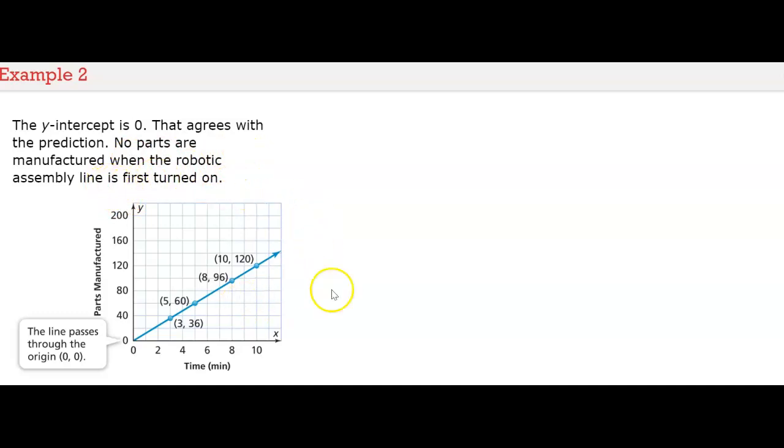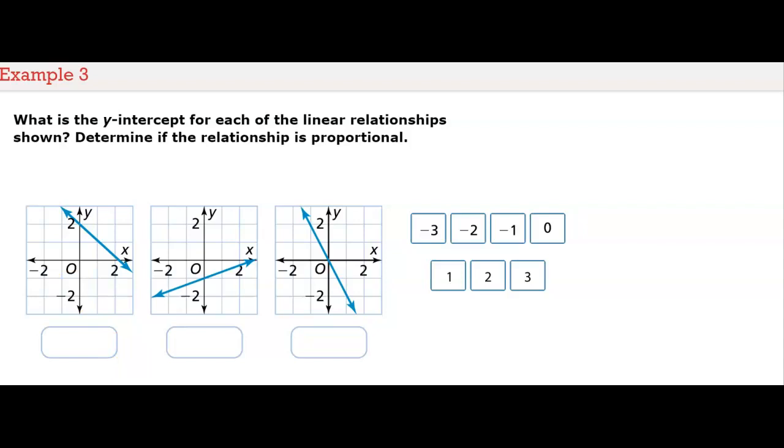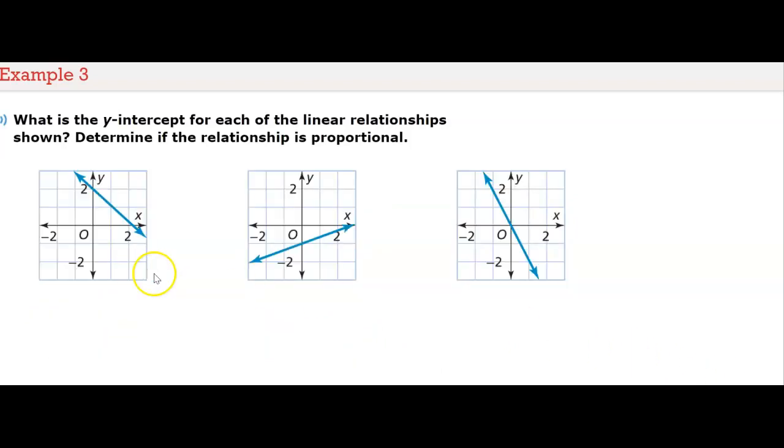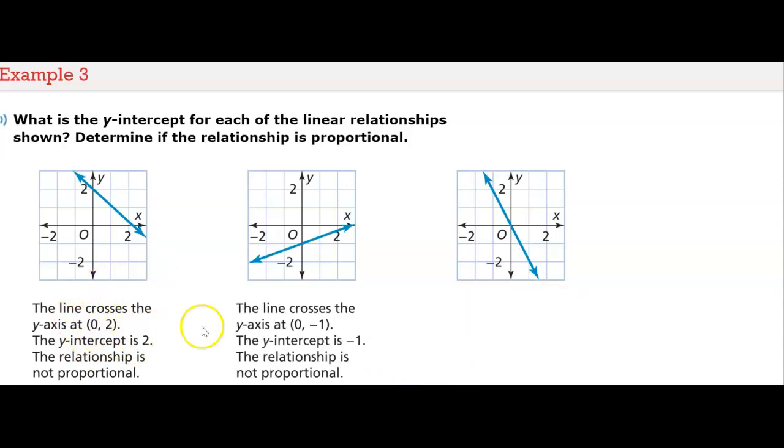What is the y-intercept for each of the linear relationships shown? Determine if the relationship is proportional. For the first graph, the y-intercept is where the line crosses the y-axis. Right here would be two, and here it crosses at negative one, and here crosses through the origin so that would be zero. Let's see if we're right. Yes, we are correct. The first one is zero and two, so two was correct. Next one was negative one, and last was zero.